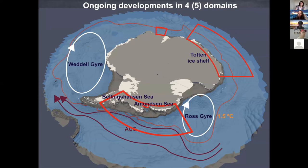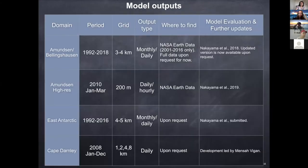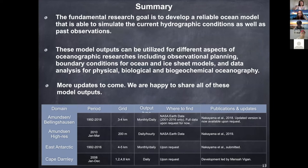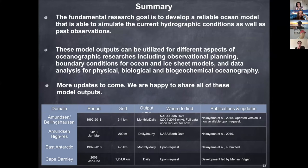I have outputs available through websites or upon request. For the big Amundsen Sea domain, I have 1992 to 2018, 3 to 4 kilometer resolution, monthly and daily outputs available from 2001 to 2016. For the high-resolution domain, this is only available for two months — 2010 January to March — and daily and hourly data is available. My research goal is to develop a reliable ocean model able to simulate the current hydrographic conditions as well as past observations. I'm happy to share any of my outputs upon request.